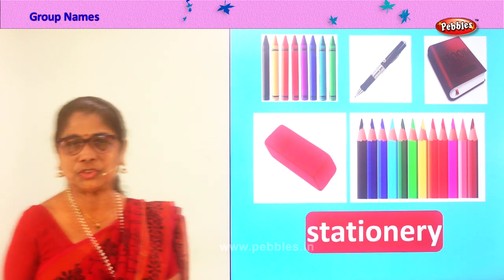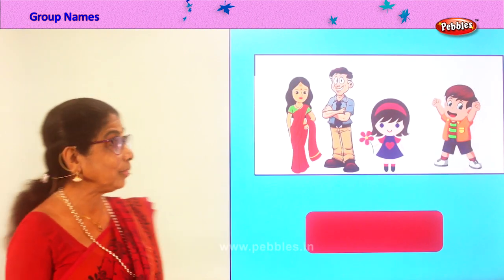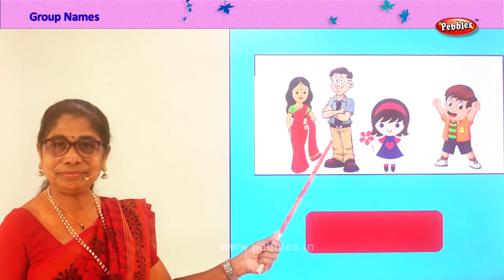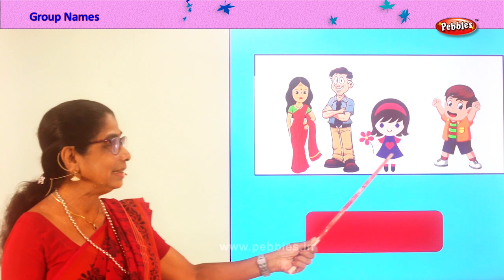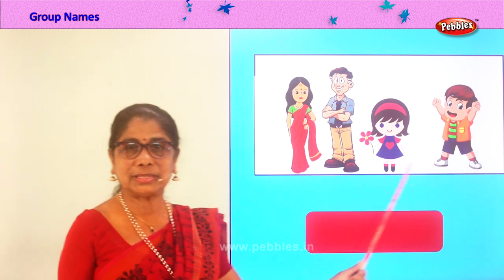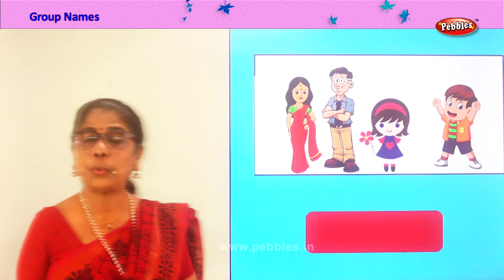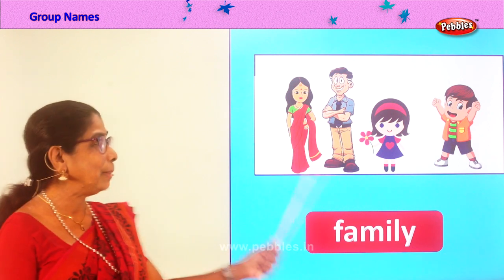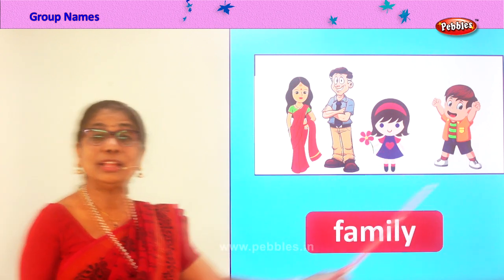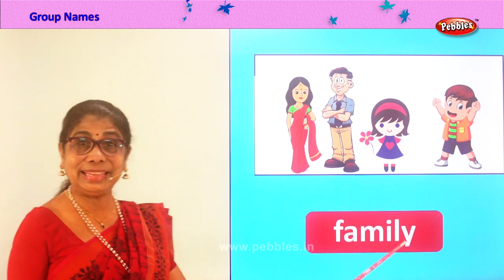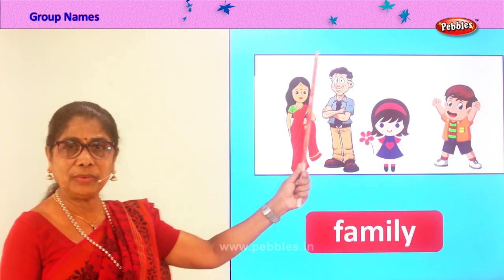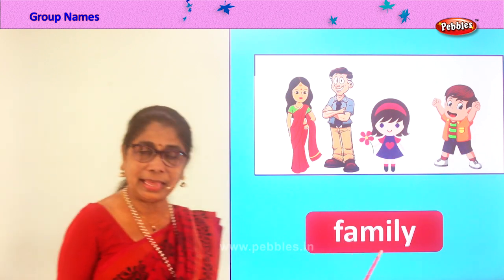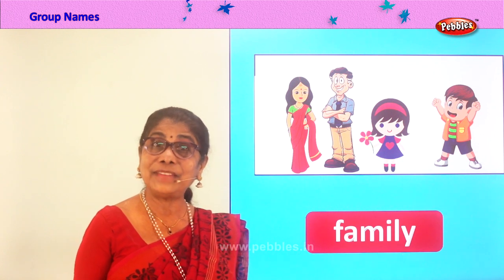Let's look at another picture and guess the group name. What do you see here? Mommy, daddy, little girl, little boy, sister, brother — what do you call these people together? Family! Dad and mum and sister and brother — the group name is family. This is a small family, and if you have grandma and grandpa, a big family. Spell family: F-A-M-I-L-Y.